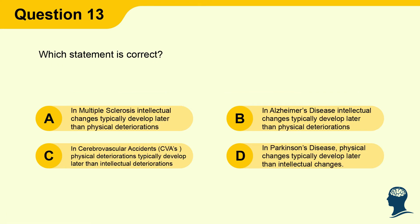Question 13: Which statement is correct? A) In multiple sclerosis, intellectual changes typically develop later than physical deteriorations. B) In Alzheimer's disease, intellectual changes typically develop later than physical deteriorations. C) In cerebrovascular accidents, physical deteriorations typically develop later than intellectual deteriorations. D) In Parkinson's disease, physical changes typically develop later than intellectual changes.